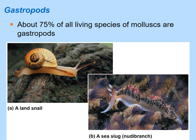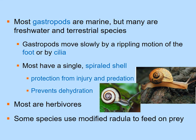Gastropods make up about 75 percent of all mollusks. Examples include snails and sea slugs. They are found in marine, freshwater, and terrestrial environments. They move slowly via a rippling foot motion, sometimes aided by cilia. Most have a single spiraled shell for protection from predators and dehydration. Most are herbivores, though some use a modified radula to feed on prey.